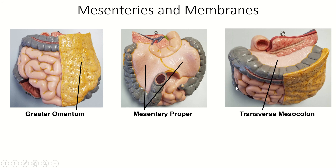On our anatomical models, this is the only one where we can see most of the mesenteries. The greater omentum is shown on one side of the model. Here are the small intestine and large intestine. The mesentery proper is shown on the back — you can't see the blood vessels in it, but you can see it's attached to the large intestine around the edges. At the top of the model, we can see the transverse mesocolon, and the pancreas is back there just for orientation. That's the end of the mesenteries. Next up, we will learn the tunics, or the layers in the walls of all of the structures in the GI tract.